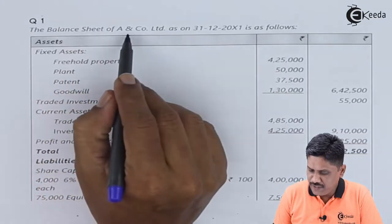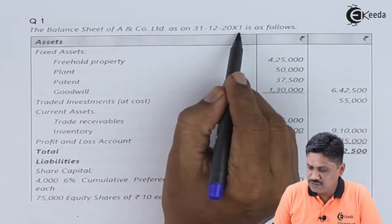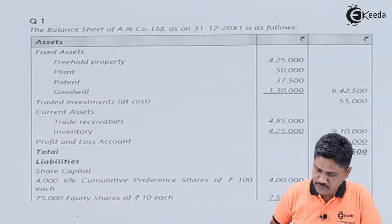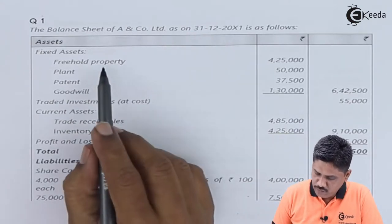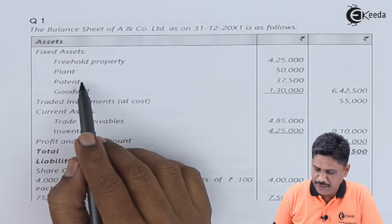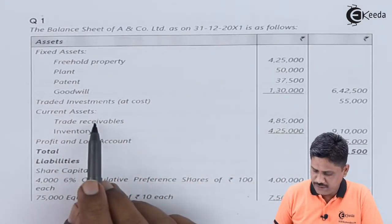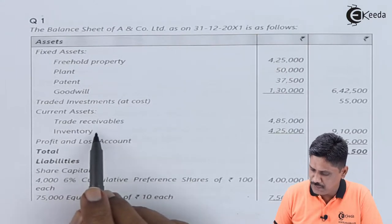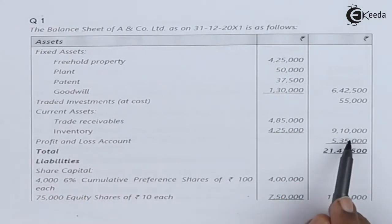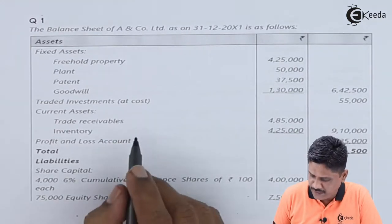The balance sheet of A & Co. Ltd as on 31st December 20X1 is provided. Fixed assets include Freehold Property, Plant, Patent and Goodwill. Trade Investment at Cost. Current Assets include Trade Receivable and Inventory. The P&L Account is given on the asset side, so it must be the loss amount — a debit balance of P&L.